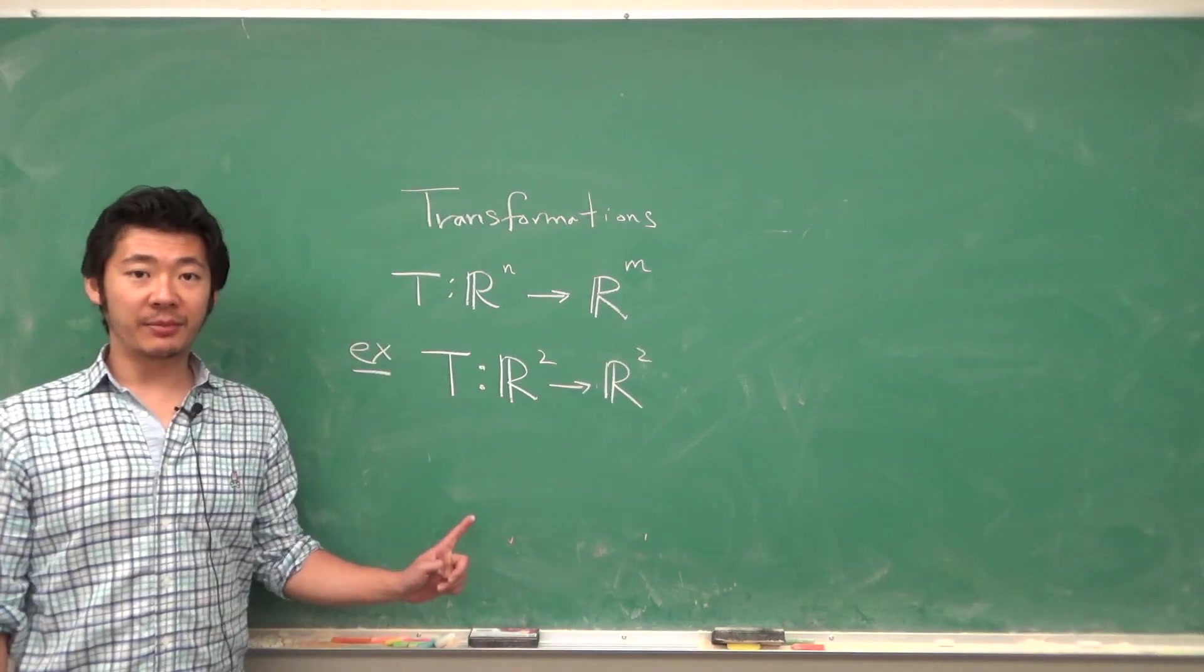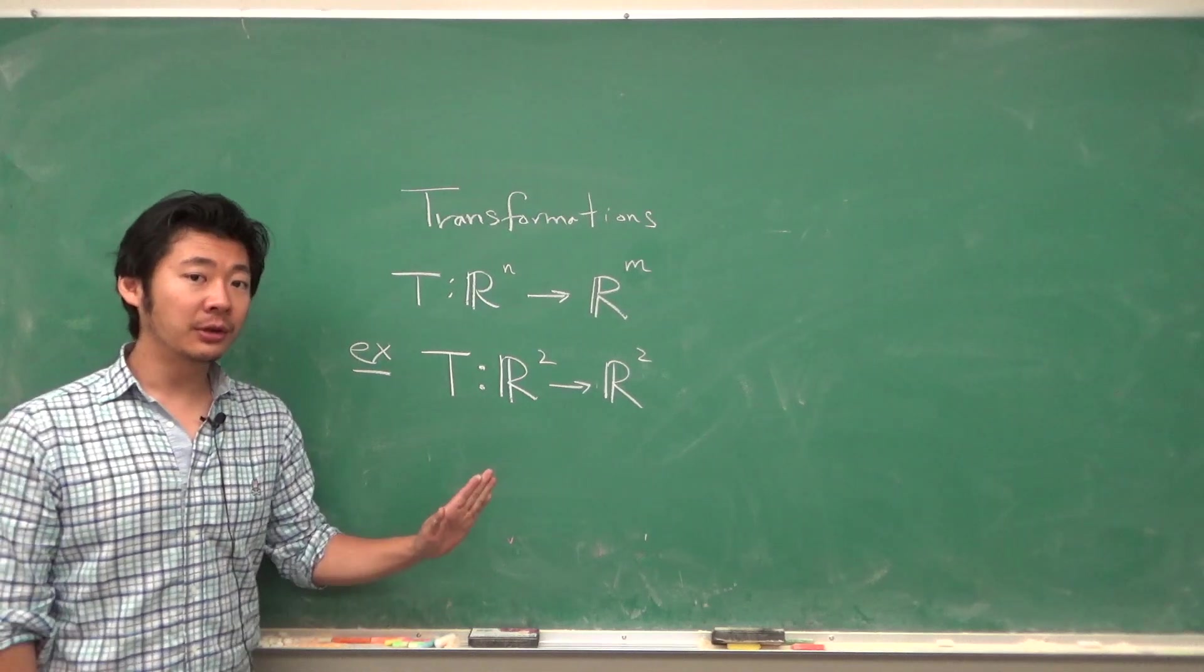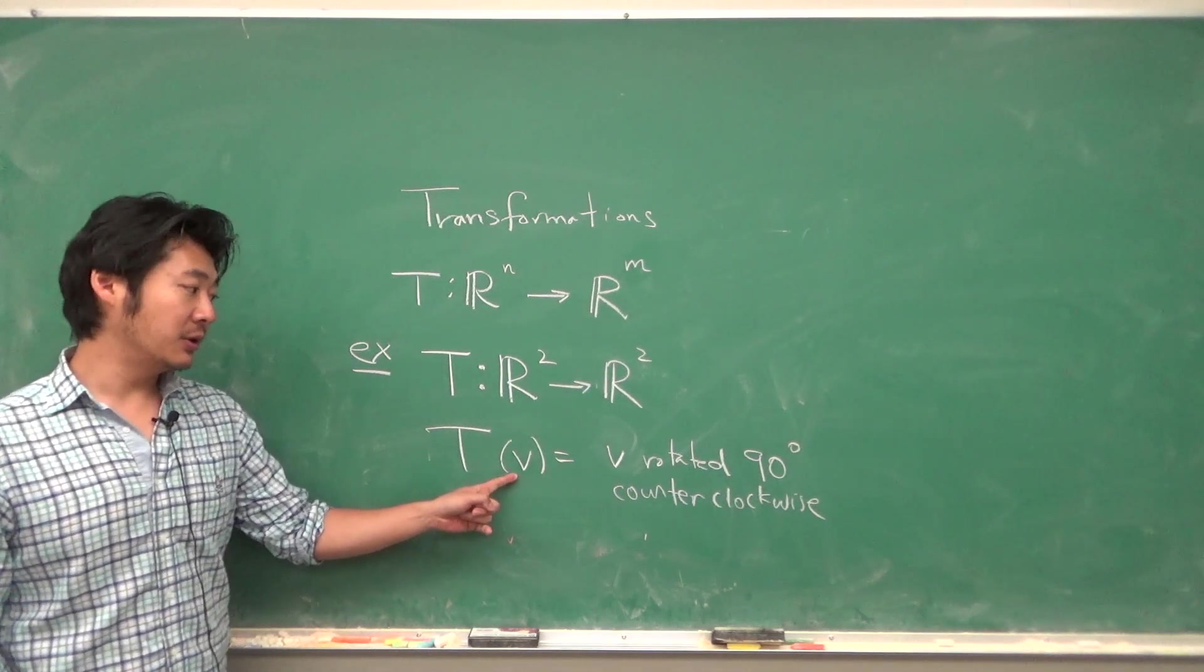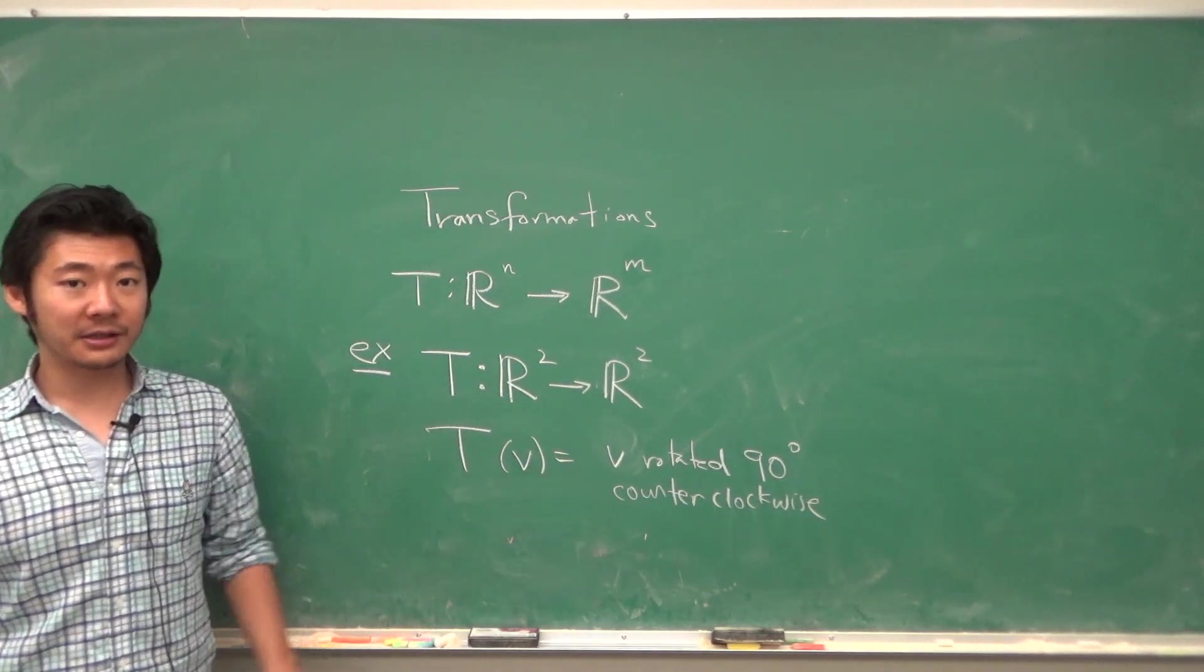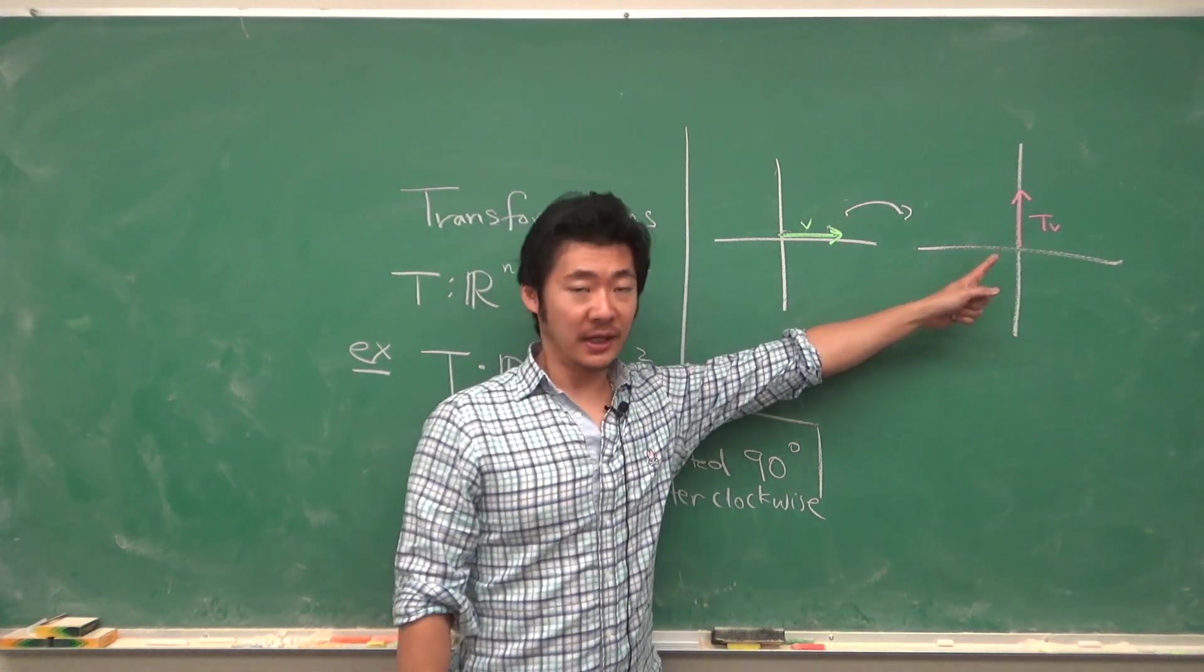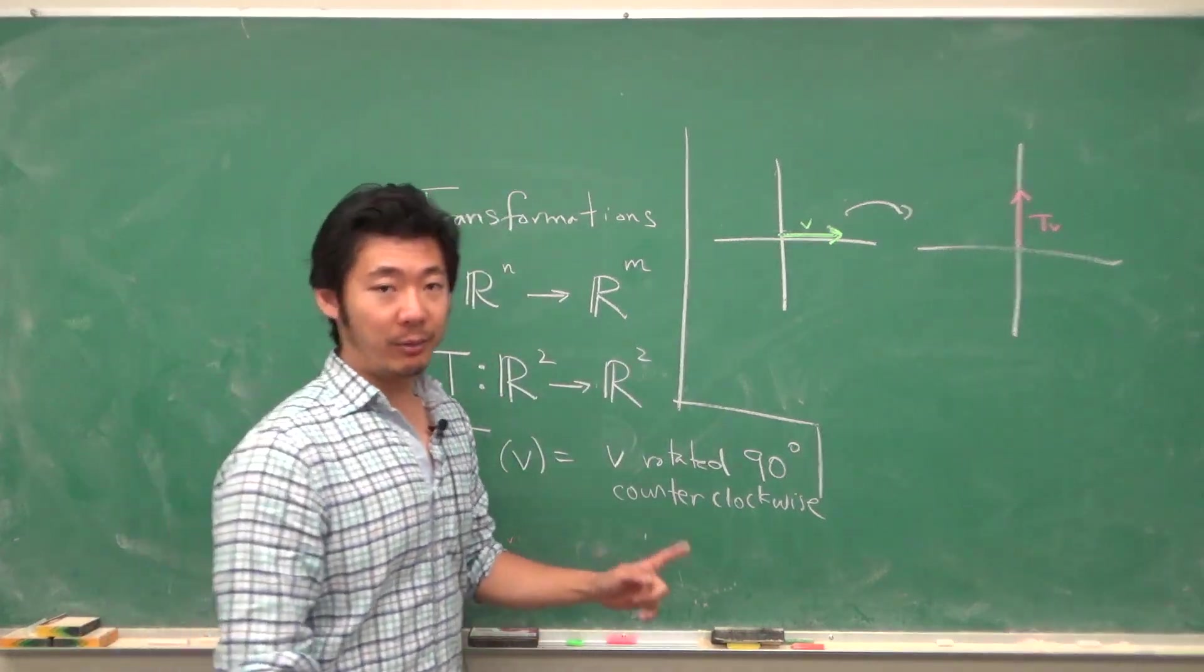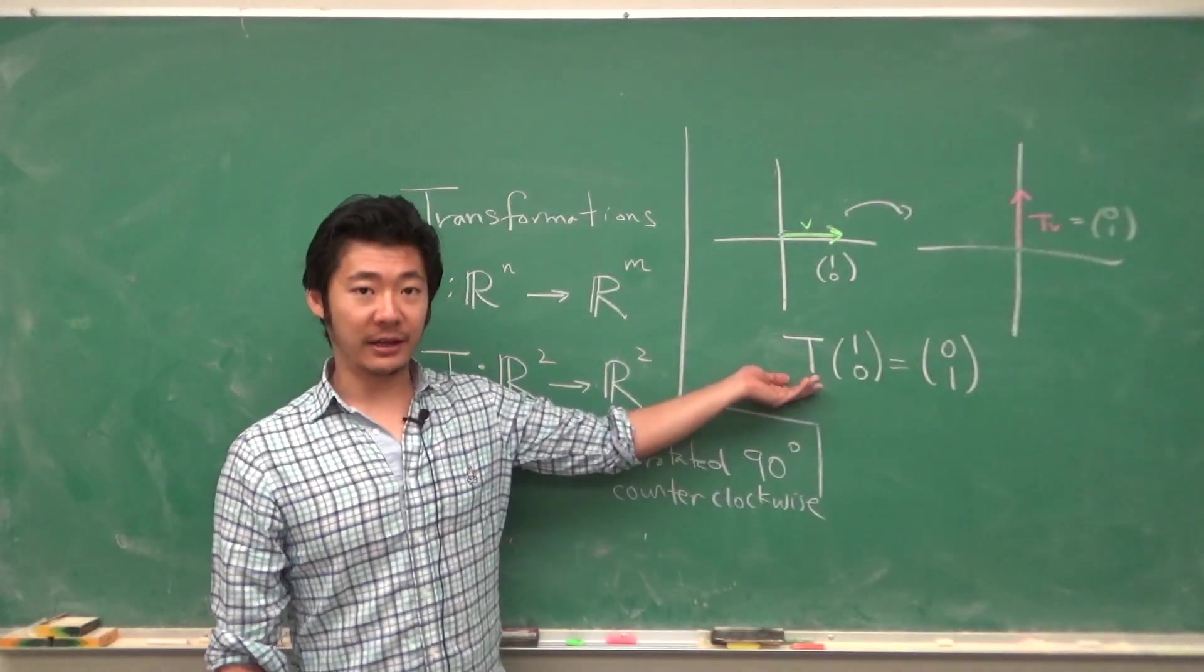Here's another example of a transformation. Suppose we have a transformation from R² to R² and the rule of the assignment is the vector v gets transformed into a vector which is v rotated by 90 degrees counterclockwise. If this is our vector v, then the vector T(v) is given by this vector. So it's simply rotated by 90 degrees. In coordinates, it would be (1,0) gets sent to (0,1), something like this.